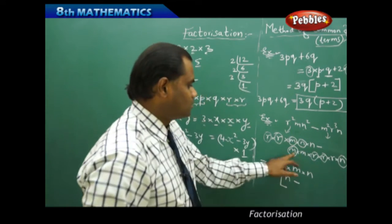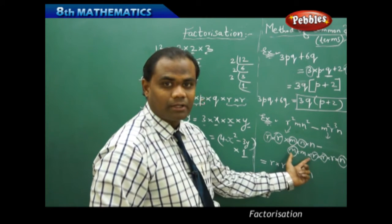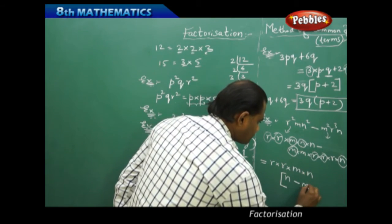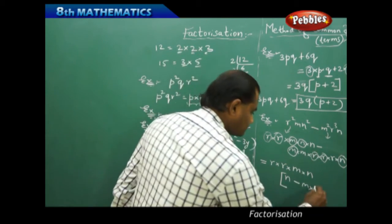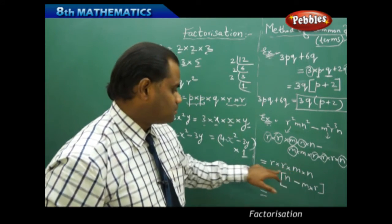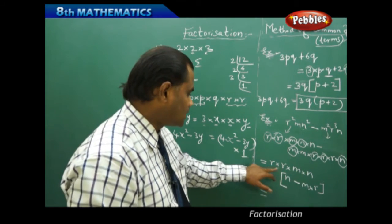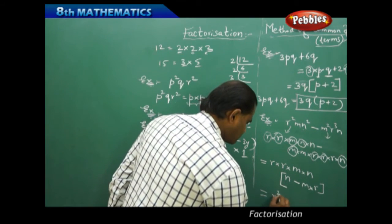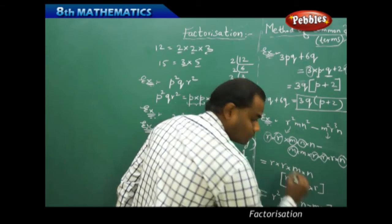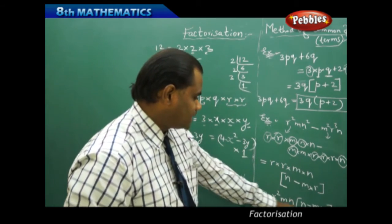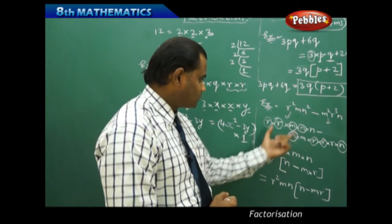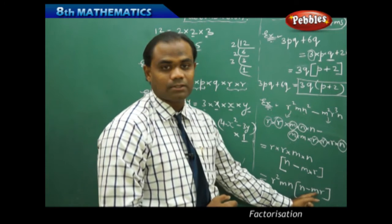Minus — the remaining non-circled terms from the second term go inside the bracket, which are m and r. When we simplify, r × r gives r², so we get r²mn as the common factor outside, and inside the bracket we have (n − mr). The final factorization of the given problem r²mn² − m²r³n is r²mn × (n − mr).